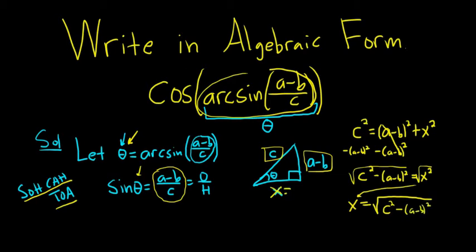So we end up with this. Now I like to go back and fill in the triangle. So C squared minus A minus B squared. We're almost done.